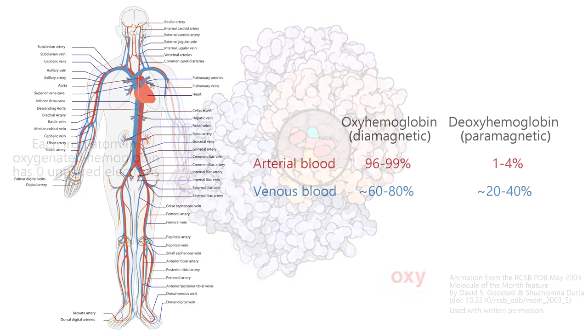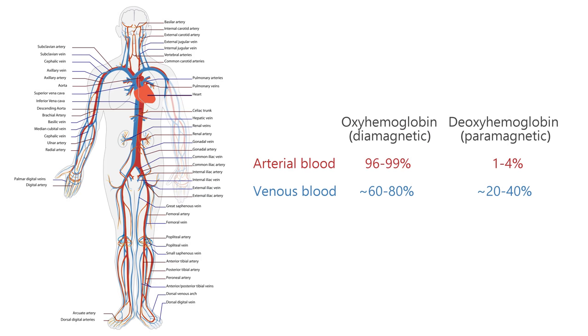The ratio between oxygenated and deoxygenated hemoglobin is typically like shown on the screen. Most of the hemoglobin in our blood is in the diamagnetic oxygenated state, being repelled by a magnet.